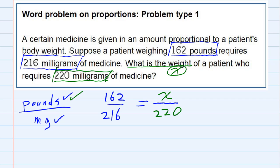Now that I've got the proportion set up, fraction on the left, fraction on the right, I can solve this by cross-multiplying. If I multiply in this direction, I would have 216 times X. And if I multiply in the other direction, I would have to get the same thing so they're equal. And that's 162 times 220.